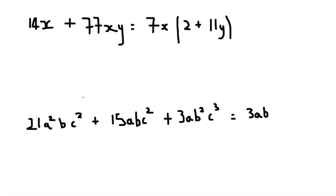And then c. So, in the first one, there's c squared. Second one, c squared. Third one, c cubed. That means we're going to put c squared because each of them have at least two c's. Now, let's open the brackets.